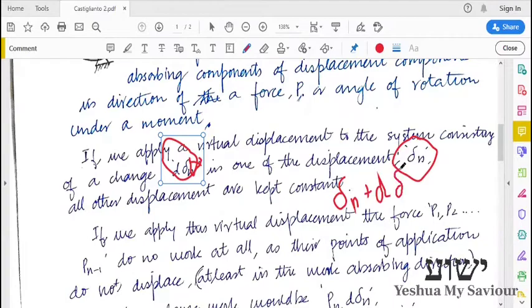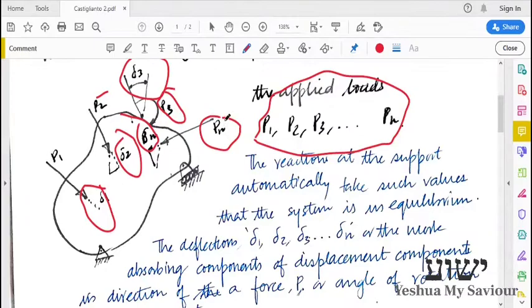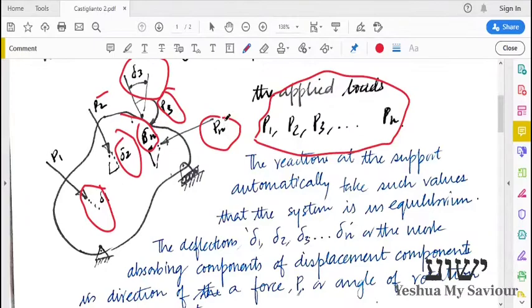Suppose that these forces don't have any components in the direction of that load. Obviously, these forces don't contribute to the work. The only load that contributes to the additional work done is Pn.